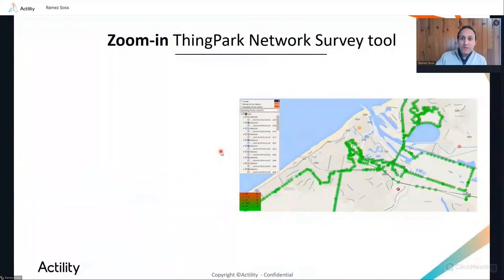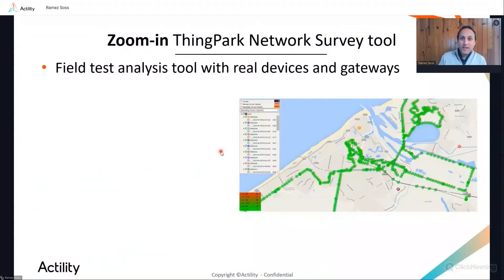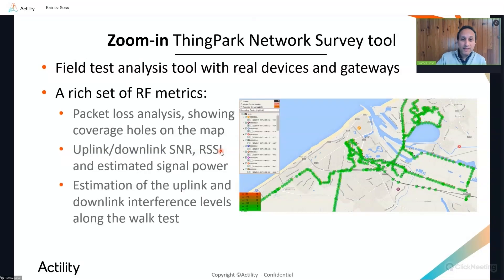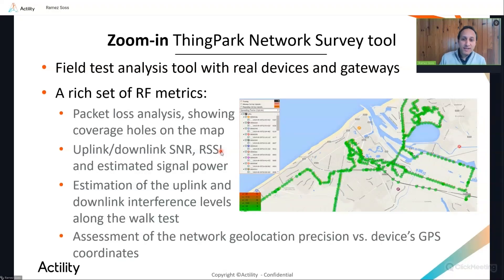Now let me talk to you quickly about the network survey tool. So the ThinkPark network survey tool is a field test analysis tool helping to assess the RF coverage with real devices and gateways. It offers a rich set of RF metrics such as the packet loss analysis representing coverage holes on the map by gray dots, the uplink and downlink SNR, RSSI and estimated signal power, and an estimation also of the uplink and downlink interference levels along the walk test, and also an assessment of the network geolocation precision by comparing the coordinates generated by the ThinkPark location solver with the real GPS coordinates reported by the device in its payload.